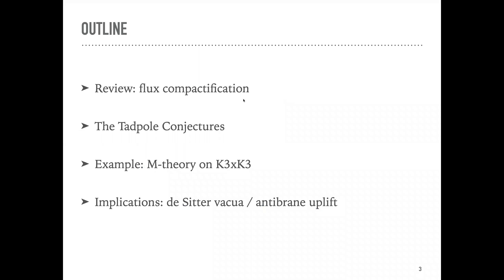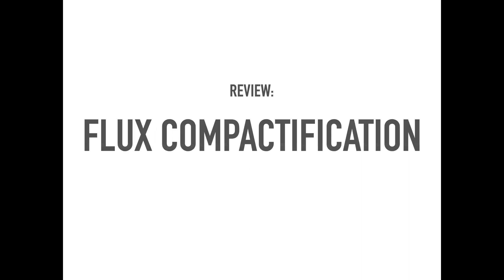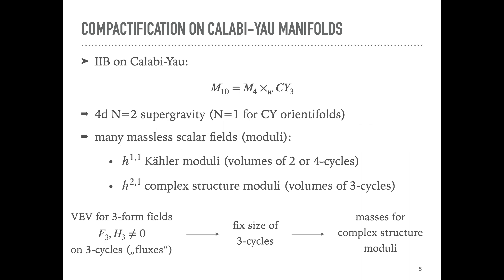I want to discuss a few ideas suggesting there might be issues if there is really a large number of moduli to satisfy all these constraints simultaneously. I will start with a short review of flux compactifications and tadpole cancellation in general, then present our conjectures — what we dubbed the tadpole conjecture — give an example providing evidence on M-theory or F-theory on K3×K3, and in the last few minutes discuss some implications for de Sitter vacua and anti-brane uplifts.